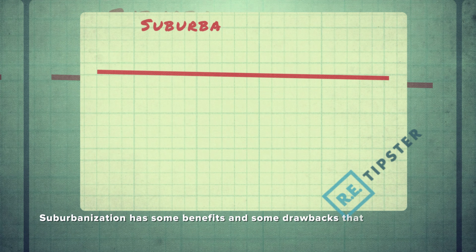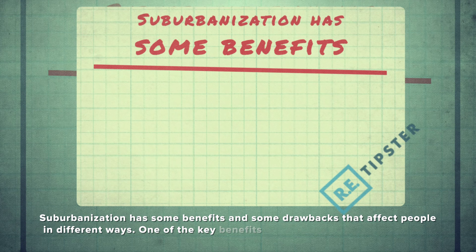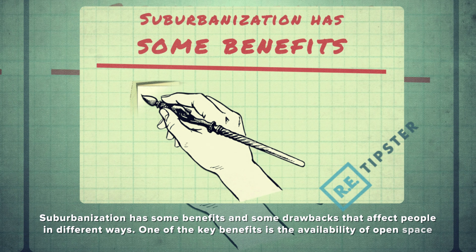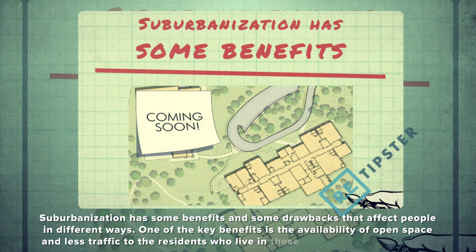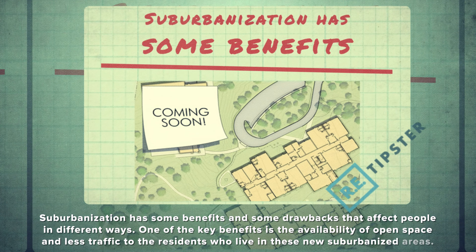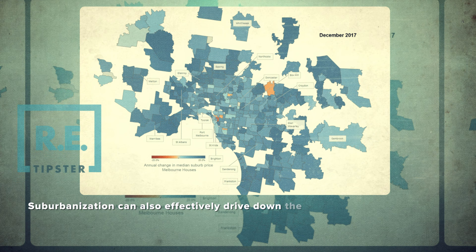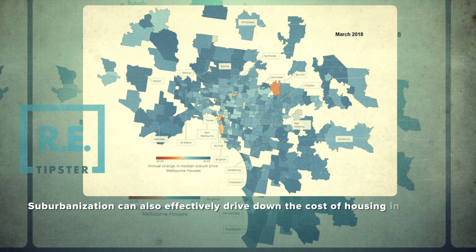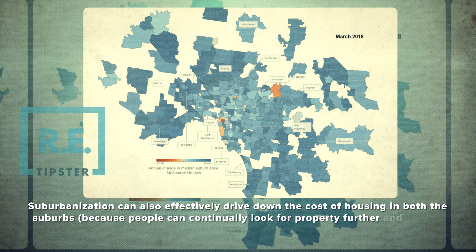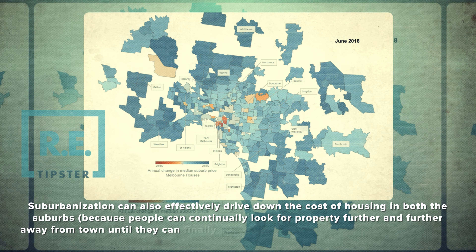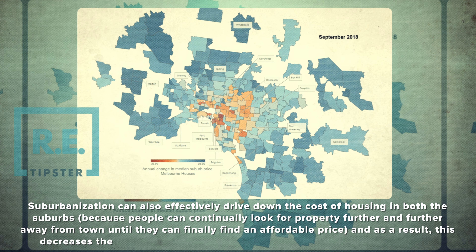Suburbanization has some benefits and some drawbacks that affect people in different ways. One of the key benefits is the availability of open space and less traffic to residents in these new suburbanized areas. Suburbanization can also effectively drive down the cost of housing in the suburbs, as people can continually look for property further and further away from town until they find an affordable price.